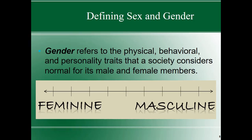Gender refers to the physical, behavioral, and personality traits that society considers normal for either male or female members. We often talk of gender as being on a spectrum, with one side being extremely feminine and the other extremely masculine, and most of us fall somewhere in between. Some gender scholars say we actually move around over the course of our day — I could be yelling in a macho, masculine way watching football, then go change a baby's diaper, make dinner. Those all have different gendered behaviors, and that jumping back and forth is sometimes called doing gender.